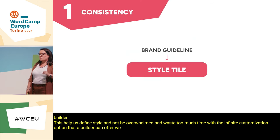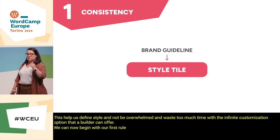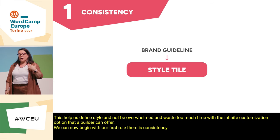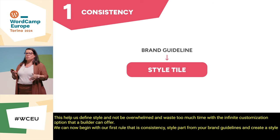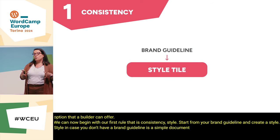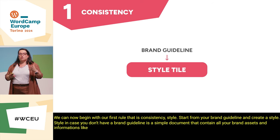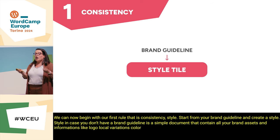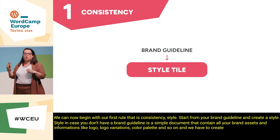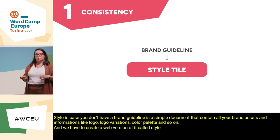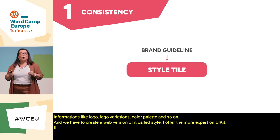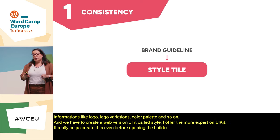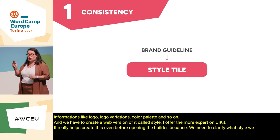We can now begin with our first rule: consistency. Start from your brand guidelines and create a style tile. In case you don't have brand guidelines, it's a simple document that contains all your brand assets and information like logo, logo variations, color palette, and so on. We have to create a web version of it called the style tile — or, for the more expert, a UI kit. It really helps to create this even before opening the builder, because we need to clarify what style we want to implement first.